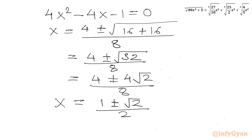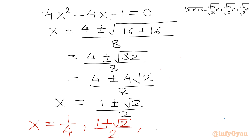So we have got ultimately three solutions: the base solution x = 1/4, and from the quadratic: x = (1 + √2)/2 and x = (1 − √2)/2.